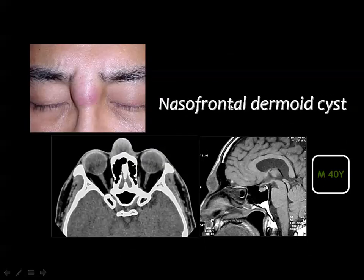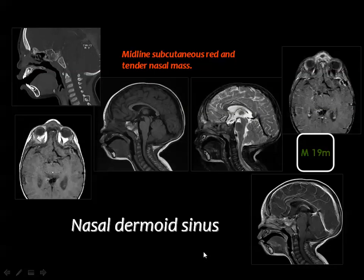This is a proved nasal-frontal dermoid cyst. Because fat is absent, it enters the differential diagnosis. Whenever fat is visible inside the lesion, that is a diagnostic criterion for dermoid. When the dermoid sinus is infected, you get enhancement, demonstrating the value of contrast-enhanced CT or MRI. On a sagittal reconstructed CT image, you can see the defect at the region of the lesion.